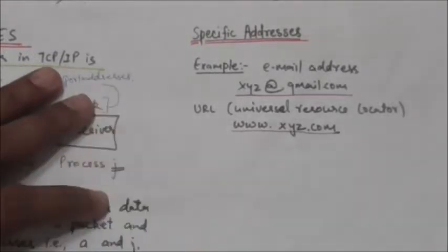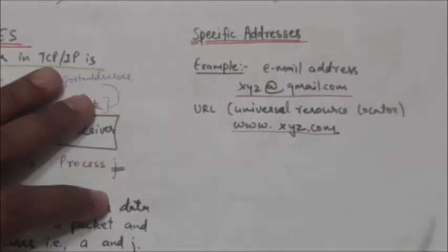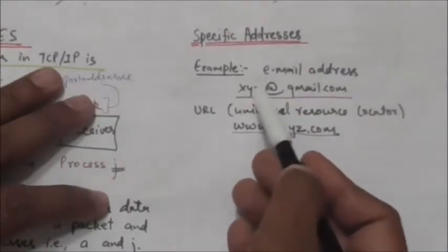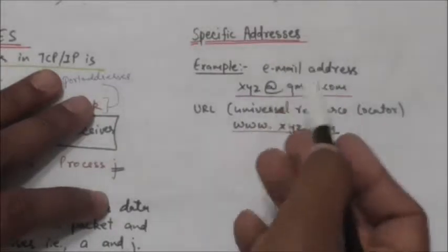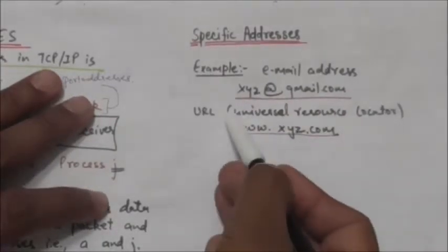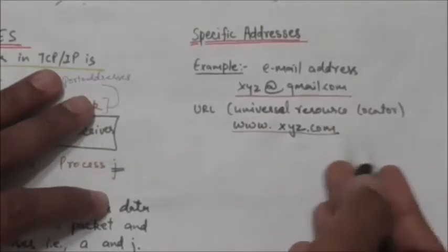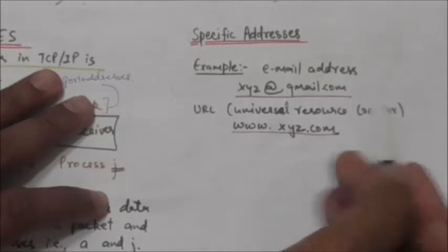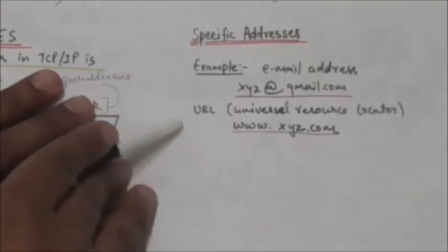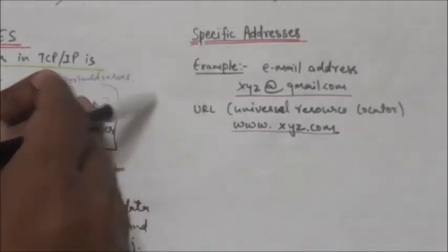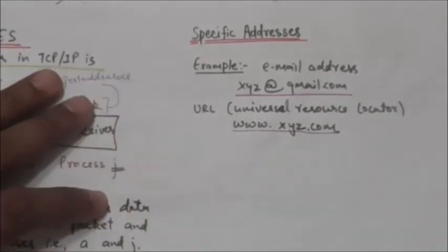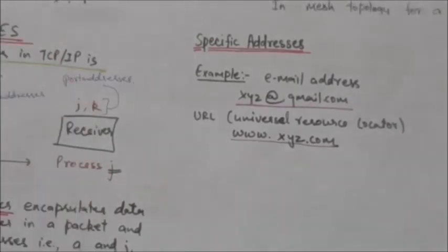Some applications have user-friendly specific addresses designed for that purpose. For example, an email address like xyz@gmail.com defines the recipient of an email. Another example is a Universal Resource Locator (URL) such as www.xyz.com, which is used to find a document on the World Wide Web. These addresses are converted to the corresponding port and logical addresses by the sending computer.